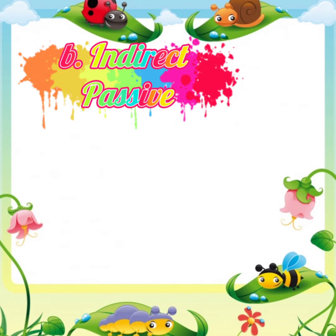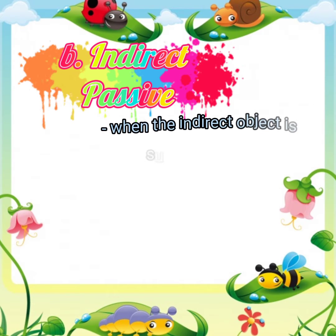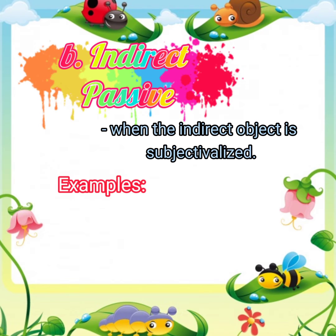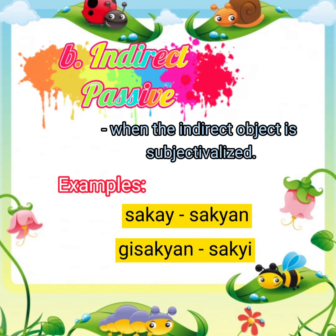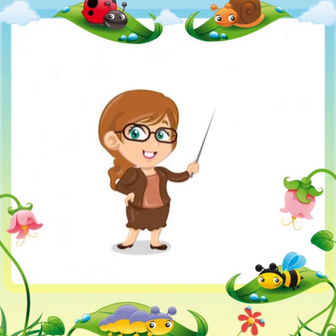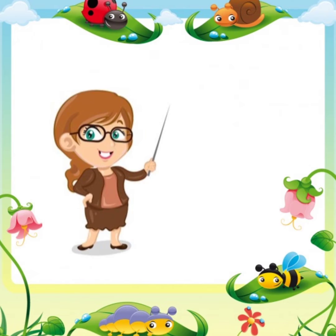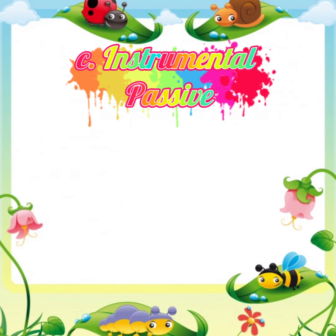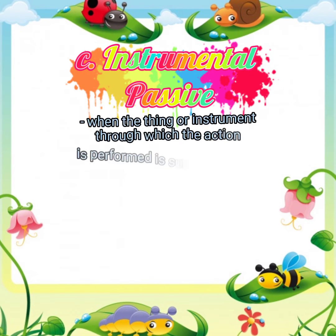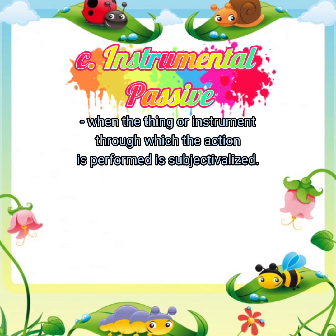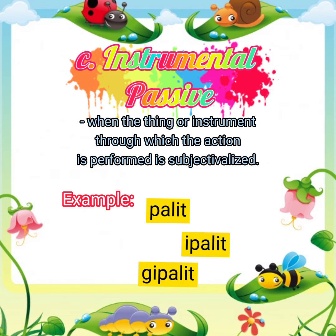The second category of passive voice is indirect passive, when the indirect object is subjectivized. Examples: sakai, sakyan, gisakyan, sakki. The third category is instrumental passive, when the thing or instrument through which the action is performed is subjectivized. For examples: palit, ipalit, gipalit.